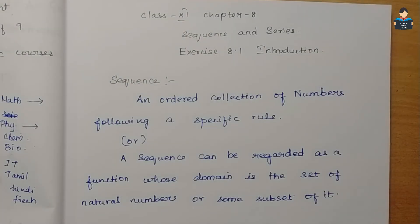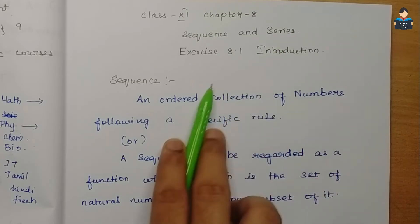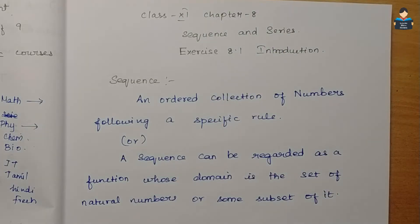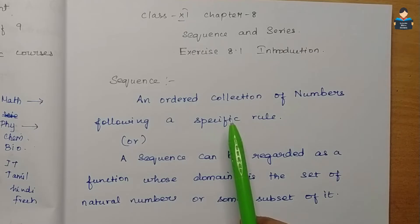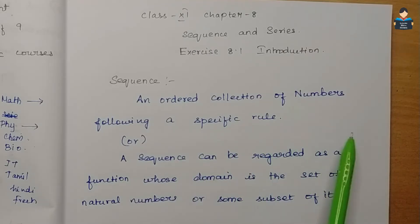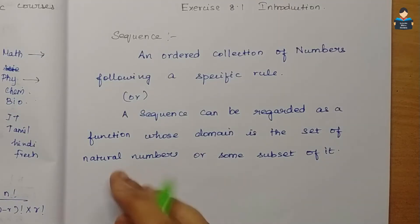Hello everyone, welcome to our channel. In this video, Class 11 Chapter 8 - Sequence and Series, Exercise 8.1 introduction part. Note: in the old edition it is Chapter 9. A sequence is an ordered collection of numbers following a specific rule or specific pattern.